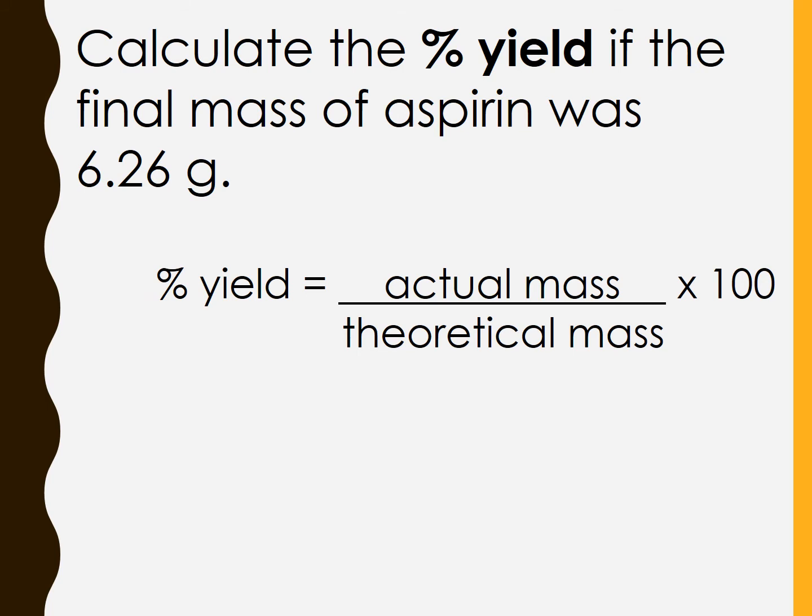Let's imagine the actual mass of aspirin produced is 6.26 grams. The percentage yield here equals the actual mass, 6.26 grams, divided by the theoretical maximum mass, 7.83 grams, multiplied by 100. That's 6.26 divided by 7.83 times 100, which comes out at 79.9888, which is 80.0% to three significant figures. That's a really good yield for an organic synthesis.